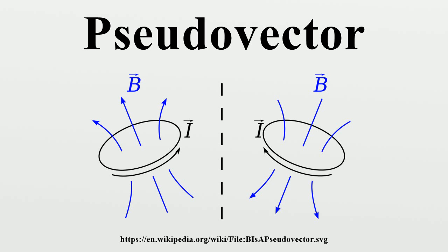One way to formalize pseudo-vectors is as follows. If V is an n-dimensional vector space, then a pseudo-vector of V is an element of the (n-1)th exterior power of V, lambda n-1. The pseudo-vectors of V form a vector space with the same dimension as V. This definition is not equivalent to that requiring a sign flip under improper rotations, but it is general to all vector spaces. In particular, when n is even, such a pseudo-vector does not experience a sign flip, and when the characteristic of the underlying field of V is 2, a sign flip has no effect. Otherwise, the definitions coincide, though without additional structure there is no natural identification of lambda n-1 with V.